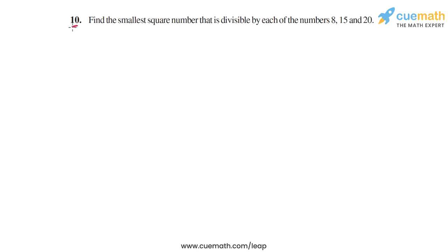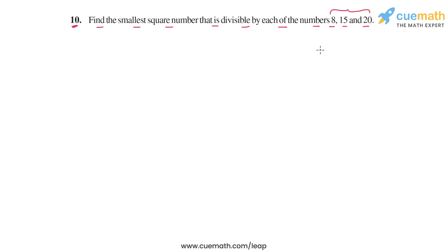In question 10, the problem statement says: find the smallest square number that is divisible by each of the numbers 8, 15, and 20. So we have to find the smallest perfect square number which is a multiple of each of these three numbers. This question is similar to the previous question of this exercise.